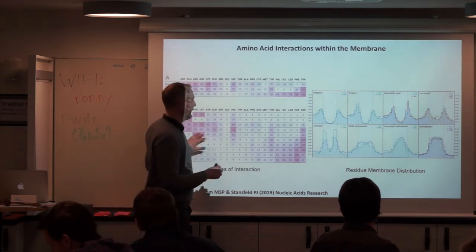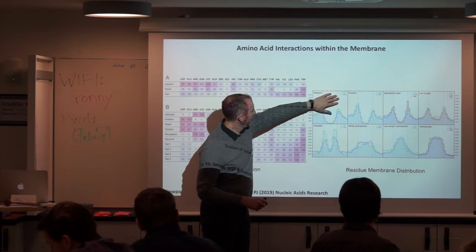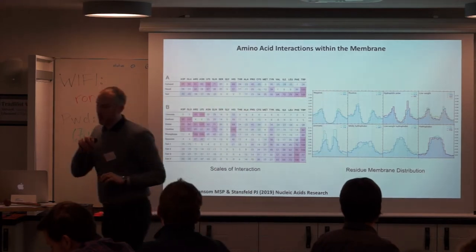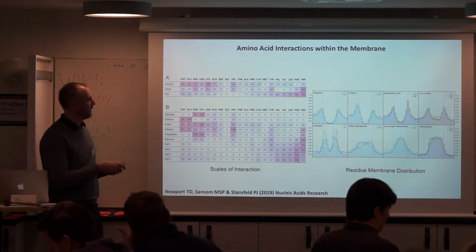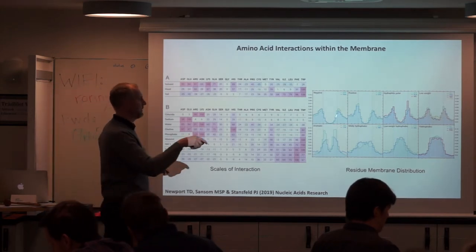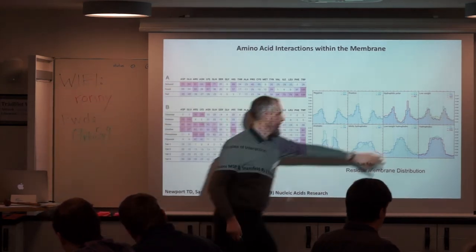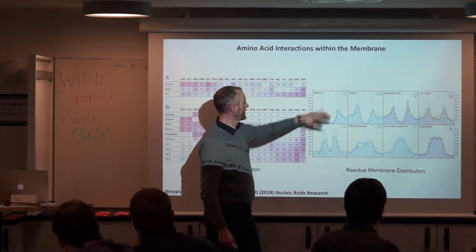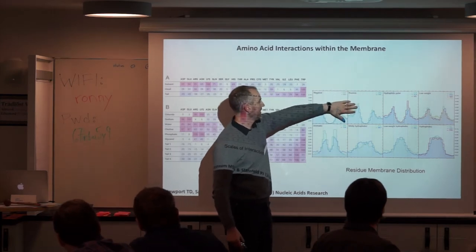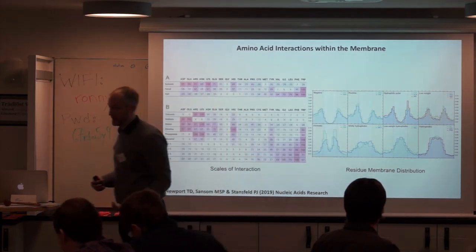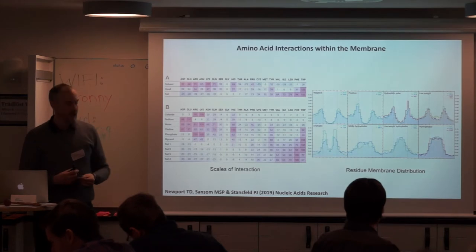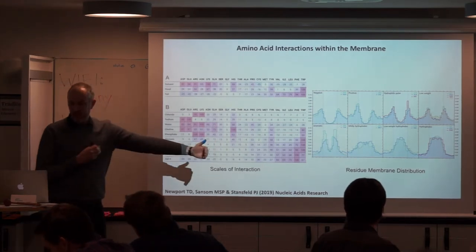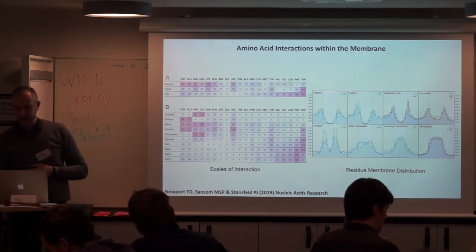We can flip this data on its side to show the inner and outer leaflets of the membrane, and show where each of these residues is distributed with respect to the membrane. Hydrophobic residues are predominantly found within the membrane core, whereas positively charged residues such as arginine and lysine are found interacting with phosphate head groups, as one would expect. This information is known, but it's good to see it confirmed across all the membrane protein structures that have been solved.